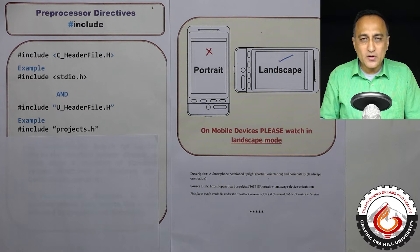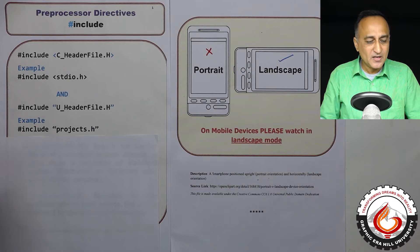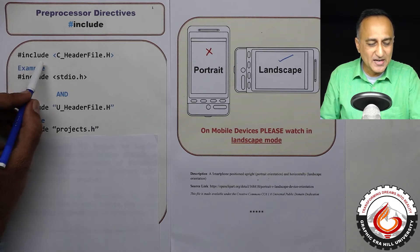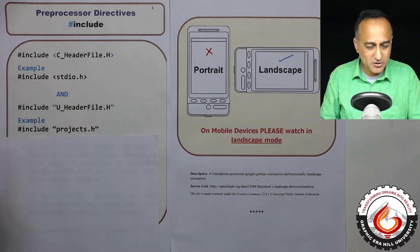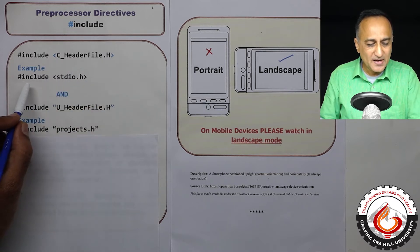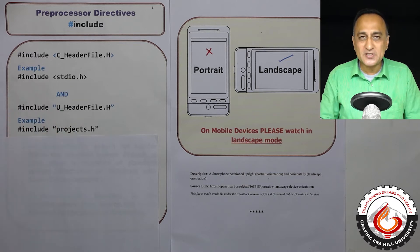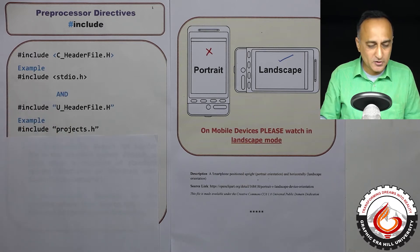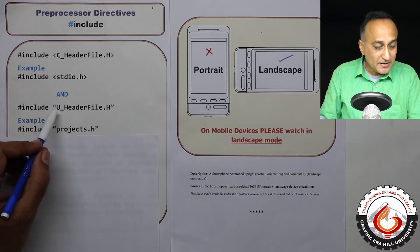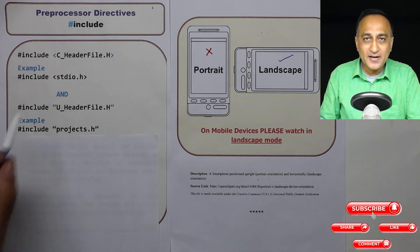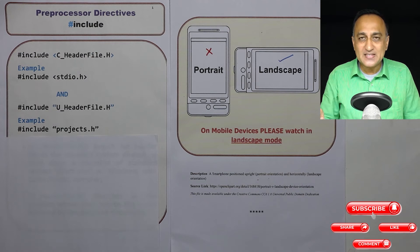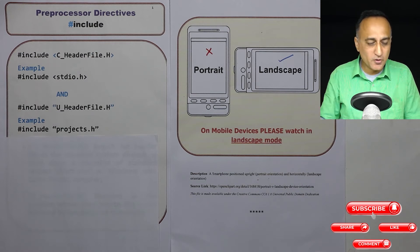Now, this hash include of the header file comes in two variations. In the first format, we can say hash include with angular brackets and the name of the C header file dot h. An example of that could be hash include stdio.h, which stands for standard input output dot h. The second approach to include a header file could be hash include with double quotes and the user header file dot h. This is a header file which comes along with the C standard or the C compiler which we are going to use.